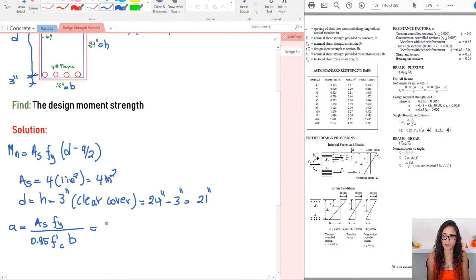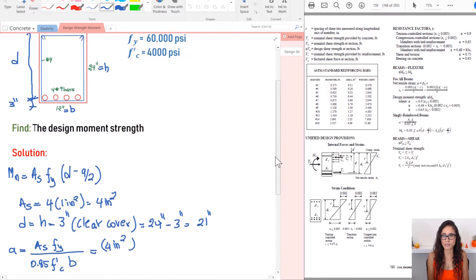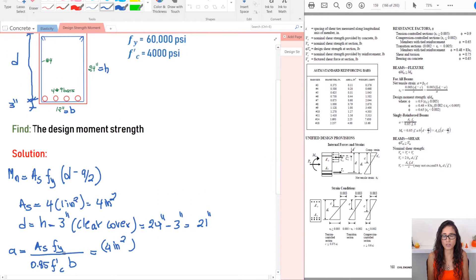So AS which we calculated here, it's four inches squared multiplied by FY. So FY is given as PSI. I usually like to use kips just because it's easier and I don't have to write all the zeros in the calculator and it just takes a lot of time. So I'm just going to go ahead and just use 60 because if you take this, you divide it by thousand, you get 60.